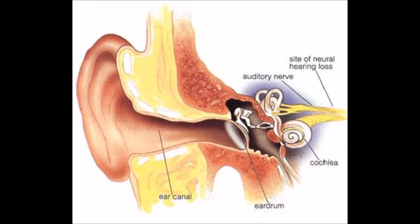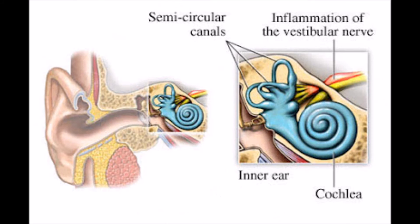Longitudinal fractures disrupting the tympanic membrane will result in a sensorineural loss and vertigo. Transverse fractures cause the nerves to be sheared or compressed. Damage to the vestibular component may affect the equilibrium. Since this nerve relays balance information, the speech-language pathologist should do a hearing test to see if the patient reports any dizziness or vertigo.